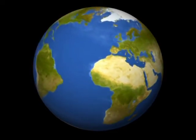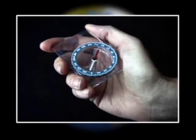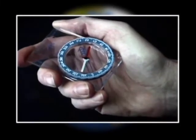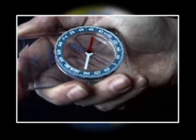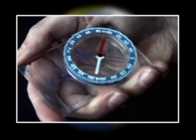Wherever you are on Earth, the magnetized needle of a compass will always point in the same direction. This occurs because of Earth's magnetism.